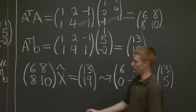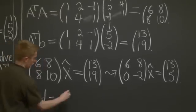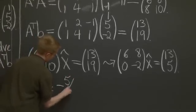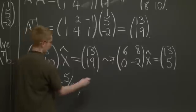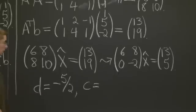You similarly change the b vector. And we back solve to get d is -5/2. And c equals, let's plug that in and see, I think you're going to get 11/2.